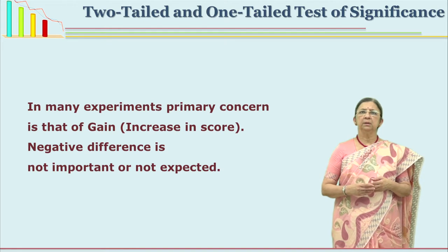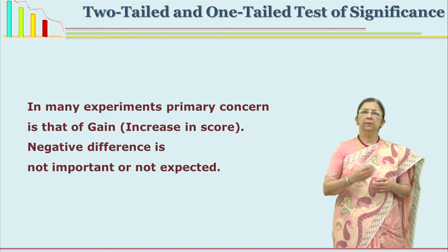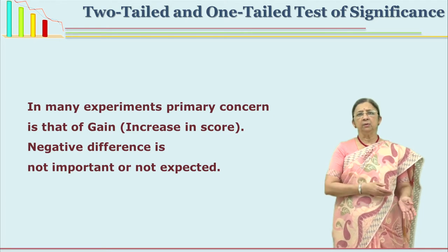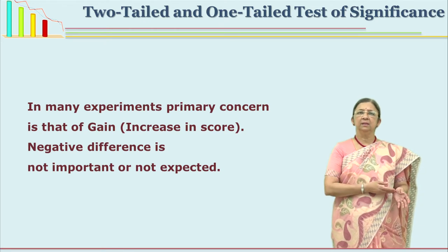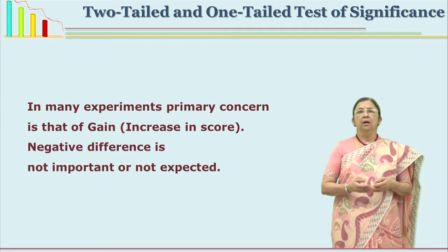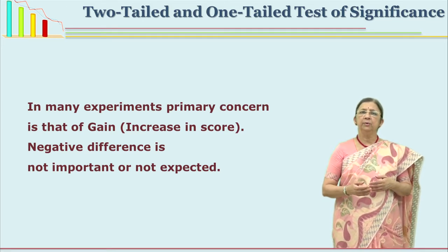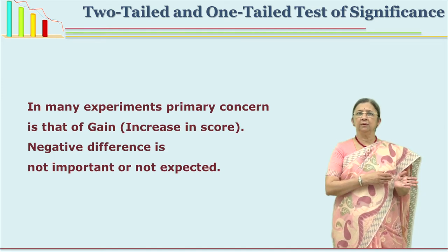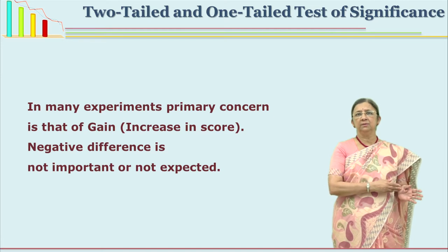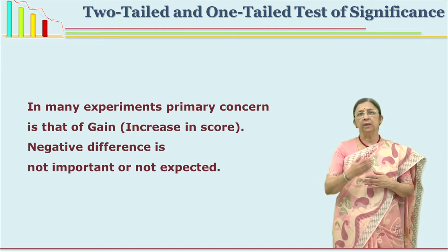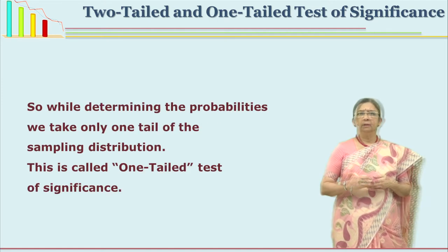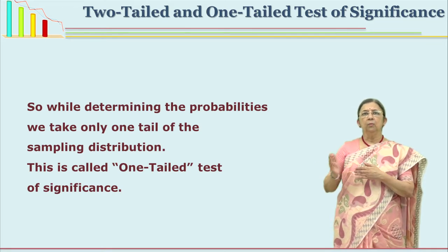When the primary concern of the researcher is only gain — for example, giving an independent variable such as a program for reading comprehension — you are sure it will increase and not decrease because you are giving additional inputs. You are not concerned about the other end. Similarly, if we want to reduce anxiety, we are only interested in reduction of scores. In these two cases the researcher is interested only in one side of the distribution.